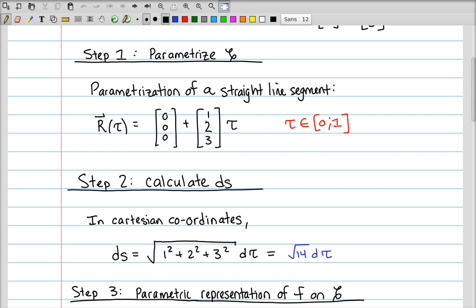So when tau equals 0, we'll be at the origin, and when tau is 1, we'll be at the point (1,2,3). So here, we've parametrized the curve itself.